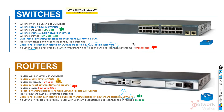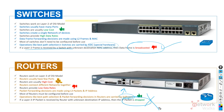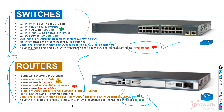If a Layer 2 frame is received by a switch with an unknown destination, the frame is broadcasted. In routers, the frame is dropped and not forwarded, so routers do not encourage broadcast while switches work based on broadcast. These are the basic differences between switches and routers.